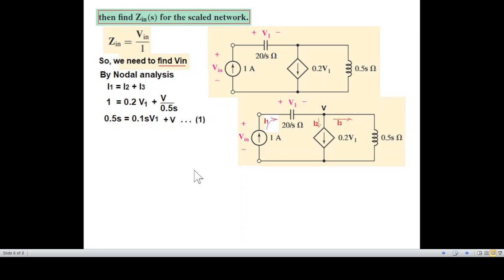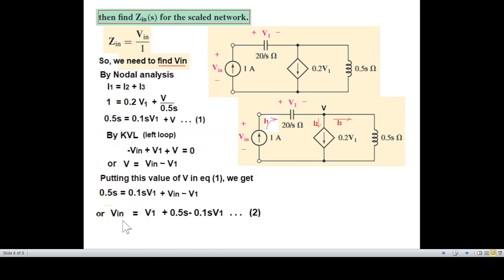Simplifying, we get equation number 1. Now we have to eliminate V. So we can again, for the left loop, we can write a KVL equation in terms of voltage. We go from here: minus V_in plus V1 and plus V equals 0. So from here, V is equal to V_in minus V1. So we put this value in equation number 1. Supporting equation 1, we get this equation, and now rearranging, V_in is given by this, which is equation number 2.